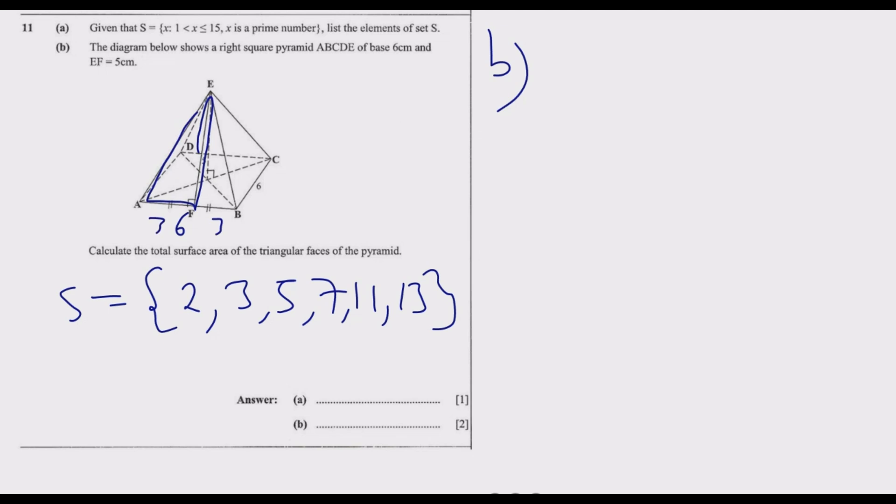Since it's a square, we have 6 by 6. This implies we have isosceles triangles. If it's 6, then this is 3 and this is 3. There are 8 of these triangles, so we just need to find one then multiply by 8. The area of one half is half multiplied by 3, then multiply by the height which is 5.